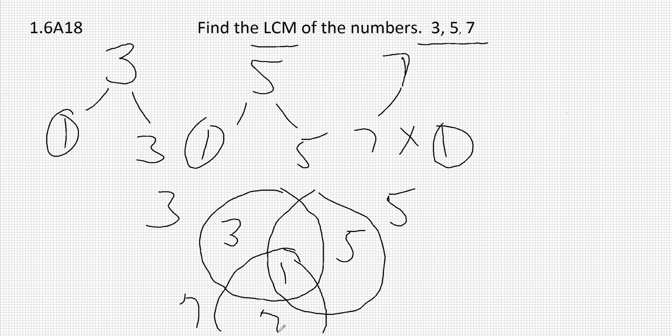Least common multiple means that we have to multiply all the common factors. So 3 times 5 times 7 times 1, but that doesn't change anything.